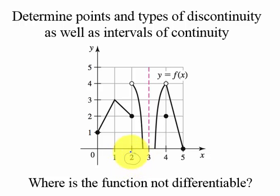I can see that this function is not continuous at 2, and that is a jump discontinuity. Not continuous there because the limit doesn't exist there.